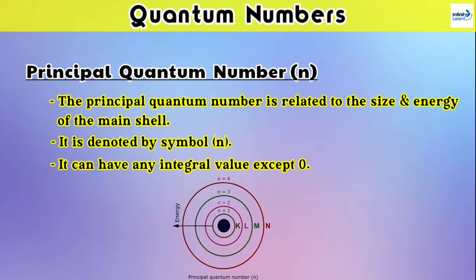For example, the 4 nearest orbitals from the nucleus are represented by K, L, M, and N, where K is the nearest orbital, L is the second nearest, M is the third nearest, and N is the fourth nearest orbital from the nucleus. So the principal quantum number of the K shell will be n = 1, because it is the nearest shell to the nucleus, and its energy will be the lowest amongst all others.